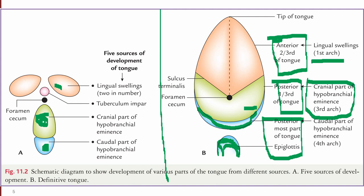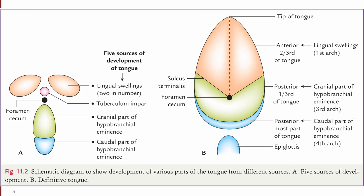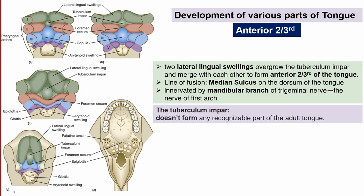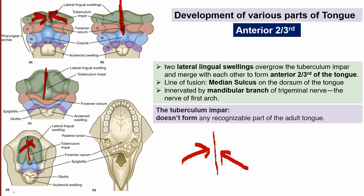In the next figure we can analyze that the two lateral lingual swellings give rise to the anterior two-thirds of the tongue, developed in relation to the first pharyngeal arch. The cranial part of the hypobranchial eminence gives rise to the posterior one-third of the tongue in relation with the third pharyngeal arch. The caudal part of the hypobranchial eminence gives rise to the posterior-most part of the tongue and the epiglottis of the larynx.